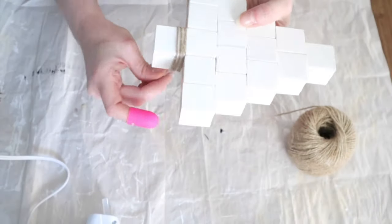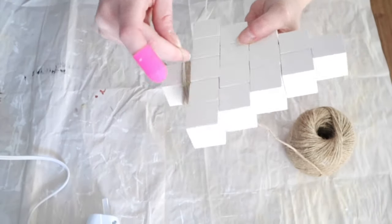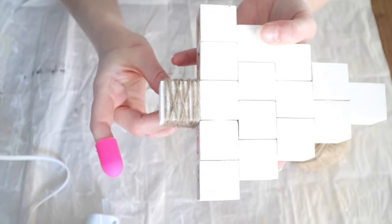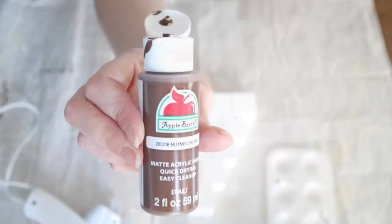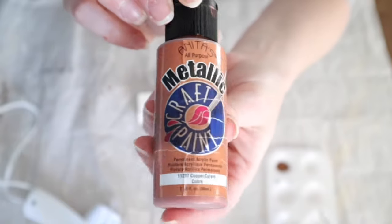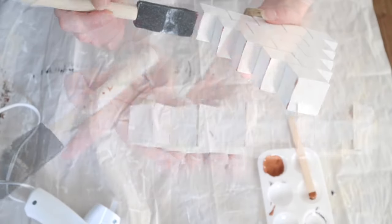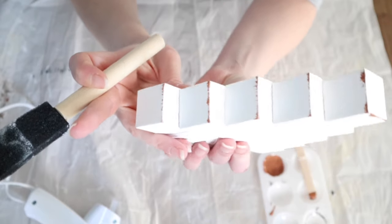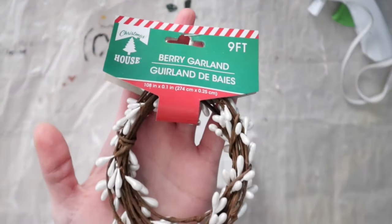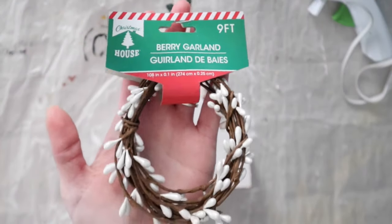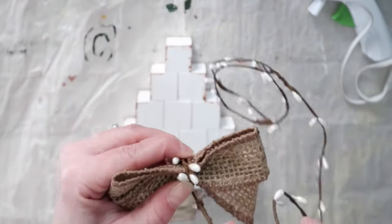Then I went in with this Dollar Tree twine and just wrapped the bottom. I also decided to go back in with some of my copper paint and give the edges a little bit of wear.